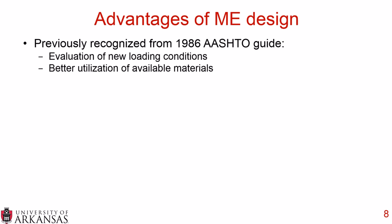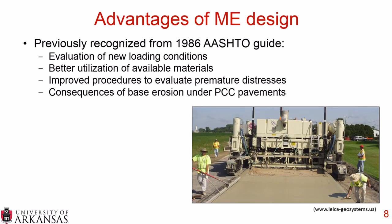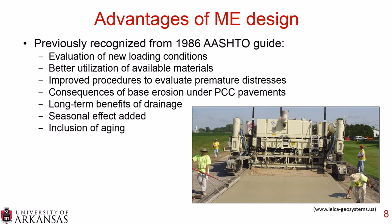Other advantages of ME design — recognized from the 1986 AASHTO Design Guide onward — include new loading conditions available to evaluate, better utilization of available materials, improved procedures to evaluate premature distresses, and the ability to examine consequences of base erosion under Portland cement concrete pavements. We can see long-term benefits of drainage, there is a much more robust climate analysis within ME design, and you also include the aging of pavement materials, which is a very significant variable that goes into the performance of paving materials.